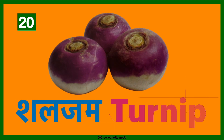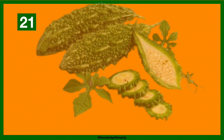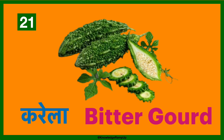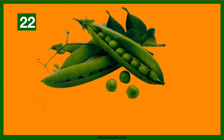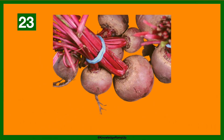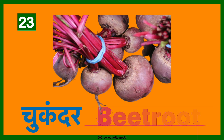Shaljum — the English name is turnip. Karela — this is bitter gourd in English. Matar — matar is peas in English. Chukandar — is beetroot in English.